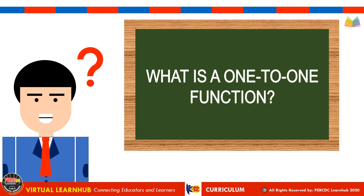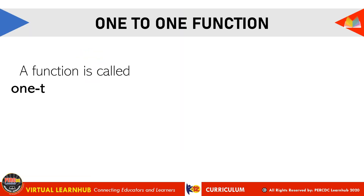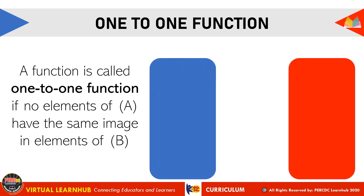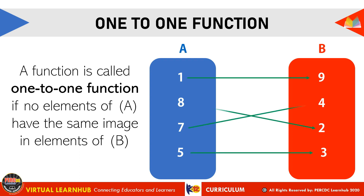So first, what is a one-to-one function? A function is called a one-to-one function if no elements of A have the same image in elements of B. For example, we have two sets, namely set A and set B. Set A contains the elements 1, 8, 7, and 5. Set B contains the elements 9, 4, 2, and 3. If 1 corresponds to 9, 8 corresponds to 2, 7 corresponds to 4, and 5 corresponds to 3, then we can say that this relation is a one-to-one function.